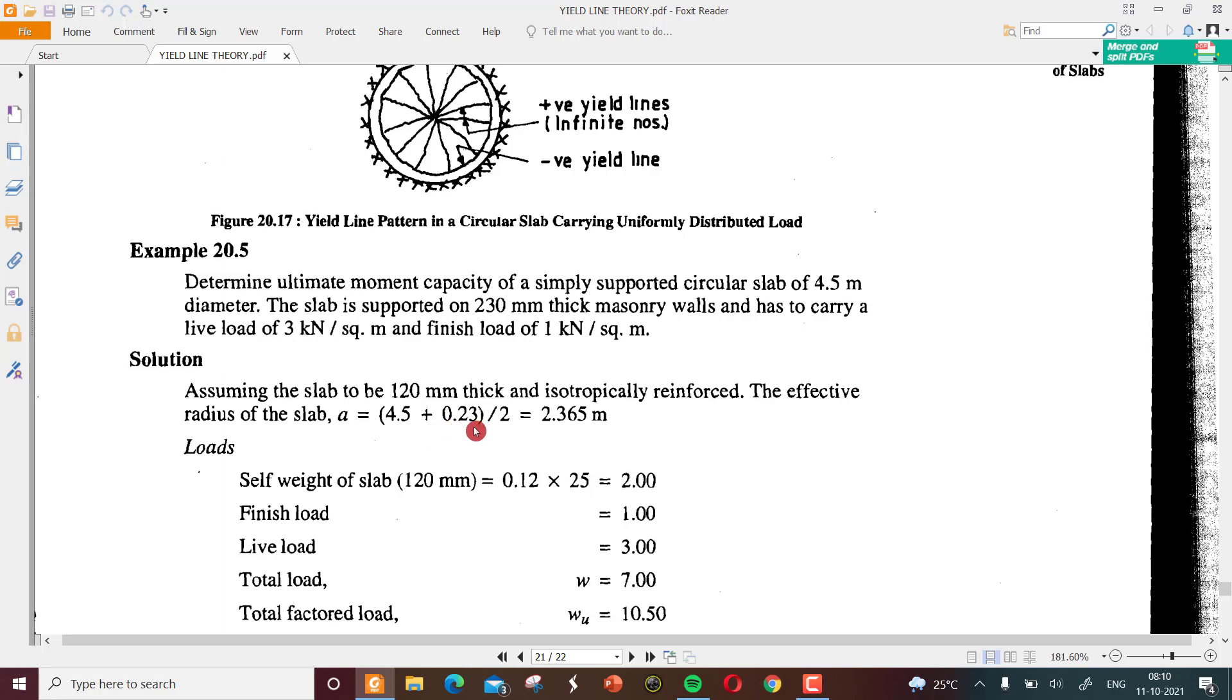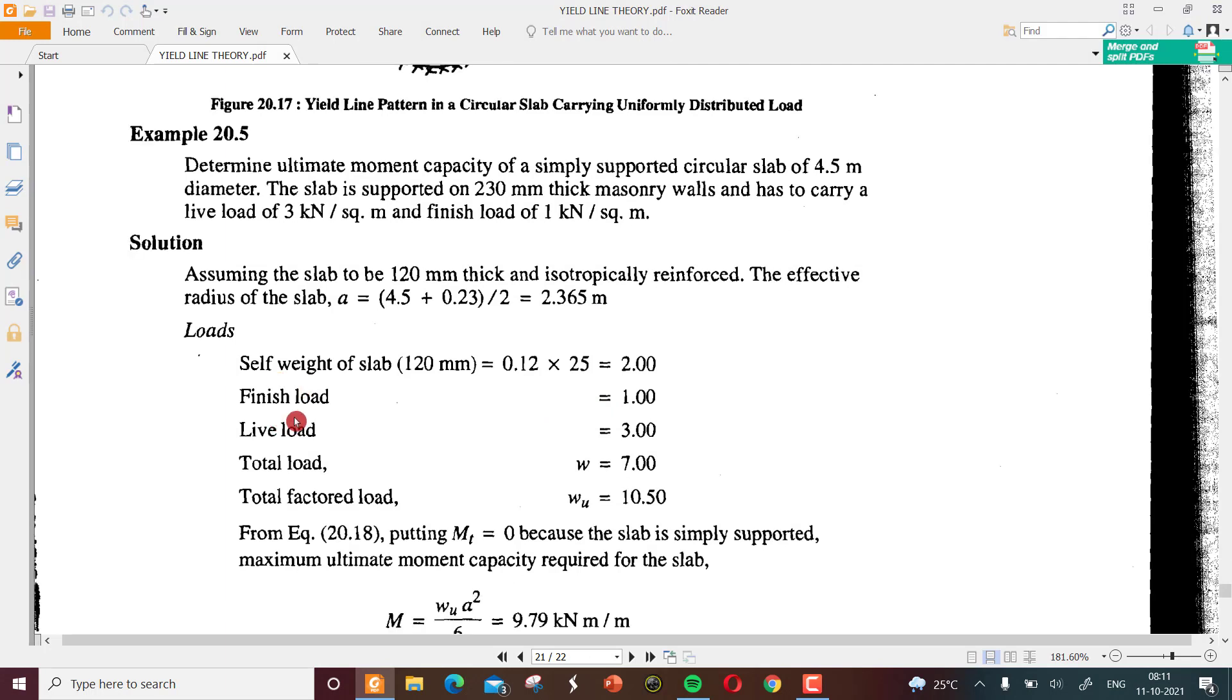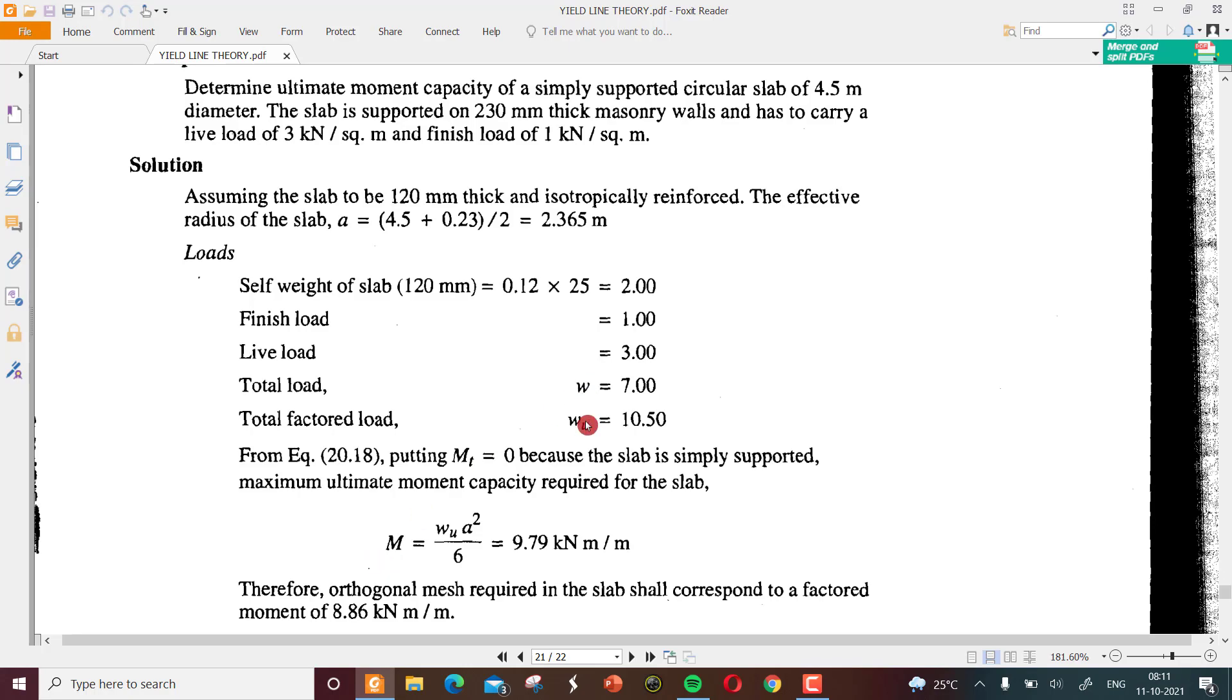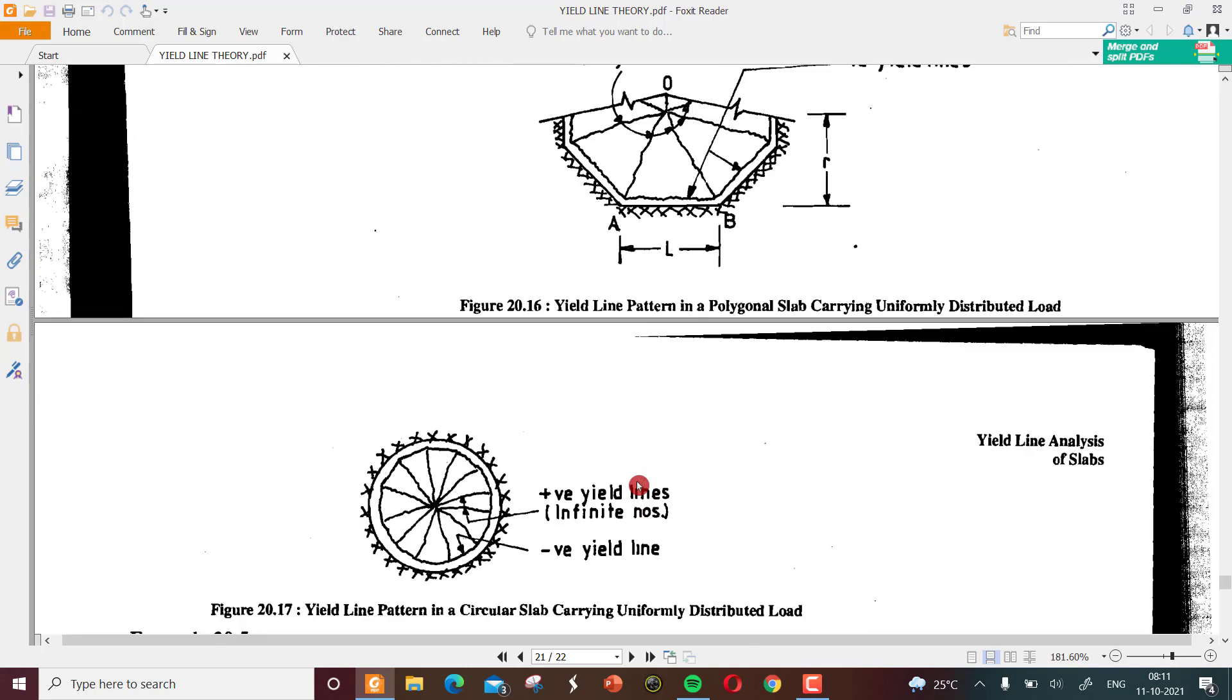From center of support to center of support converted to radius: total diameter 4.5 clear diameter plus center to center between support. The support thickness is 0.23, so all divided by 2 will give you the effective radius 2.365. Then the calculations for load: self weight of slab comes around 2, finished load given as 1, live load given as 3. Total load adding all this: 7 times 1.5 equals 10.50.